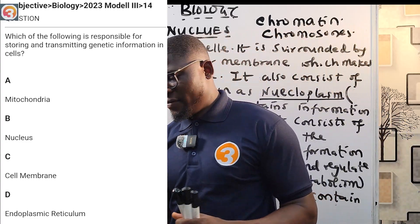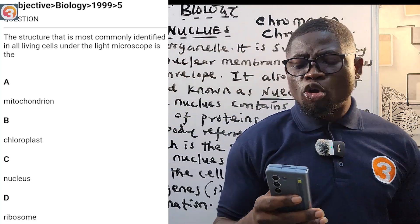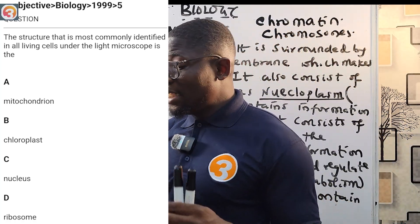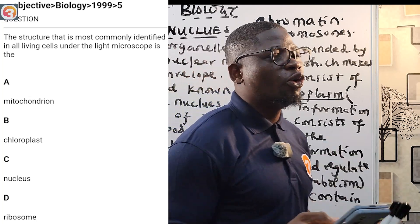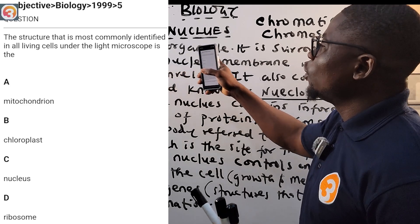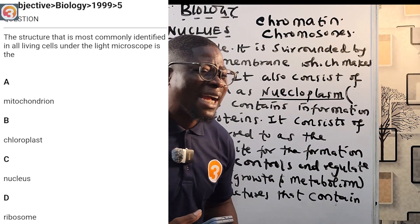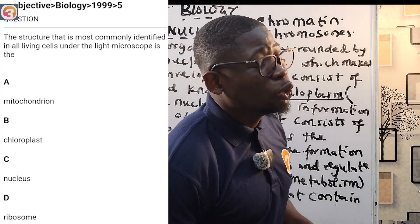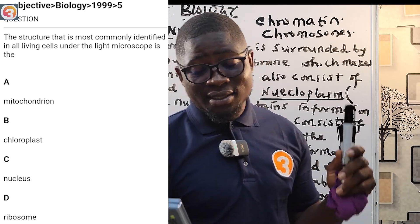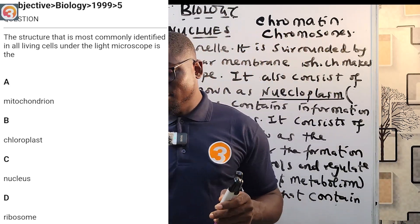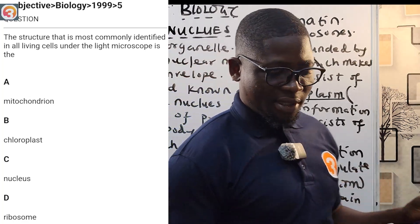Next, a 1999 question, number five: the structure most commonly identified in all living cells under the light microscope. Options are A — mitochondria, B — chloroplast, C — nucleus, D — ribosome. The answer is option C, the nucleus, as I already mentioned it is the largest and most observable organelle under the light microscope.